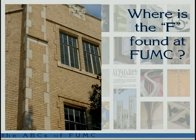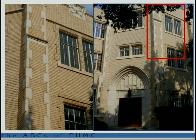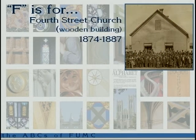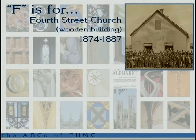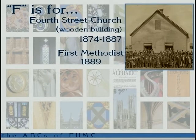Where's the F found? It's on the west side of the building, in the west parking lot by the offices. F is for Fourth Street Church — the first building that housed the congregation, from 1874 to 1887. It was a one-room wood-frame church, about 40 by 80 feet, roughly the size of Wesley Hall here. It was called Fourth Street Church because it was on the corner of Fourth and Jones. It became First Methodist in 1889 because by that time we had started two other satellite churches and were the mother church.